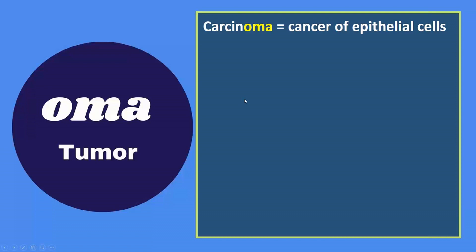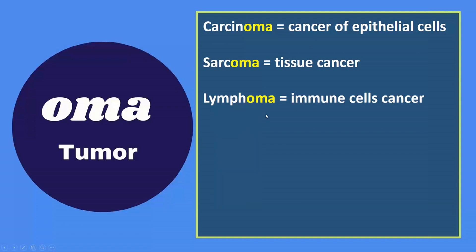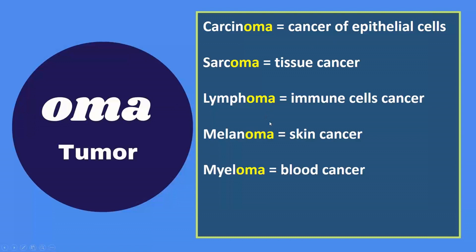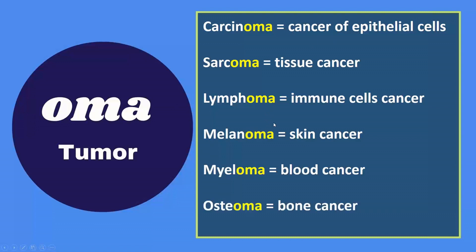Next, suffix oma refers to tumor. Examples: carcinoma is cancer of epithelial cells, sarcoma is tissue cancer, lymphoma is immune cell cancer, melanoma is skin cancer, myeloma is blood cancer, osteoma is bone cancer.